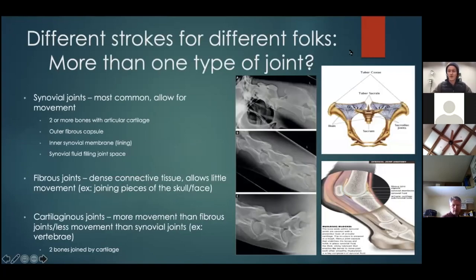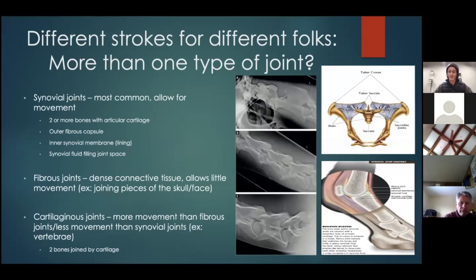Not all joints are equal — there are different types, and the most common ones we typically think of are synovial joints. These are the most common joints in the body, allowing for a lot of movement. Basically, two or more bones come together and there's a cartilage layer involved.